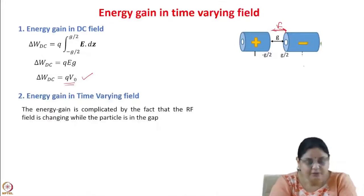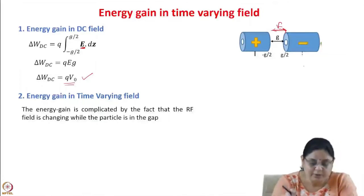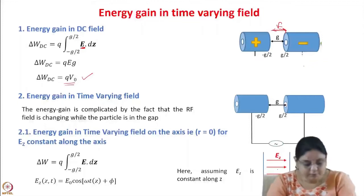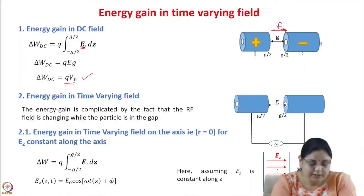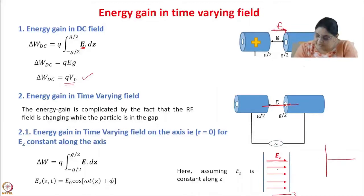The energy gain in a time varying field is more complicated because the electric field is no longer a constant value — it is now varying with time. The RF field is changing while the particle is in the gap. For simplicity, we calculate the energy gain in the time varying field on the axis, i.e., at R = 0. We also assume there is no variation of Ez with z, so it is constant with z but varying with time.